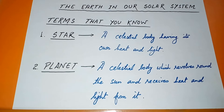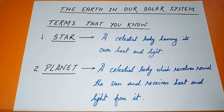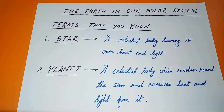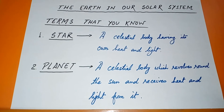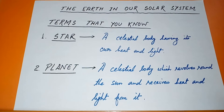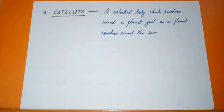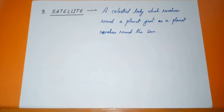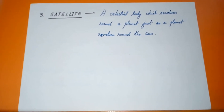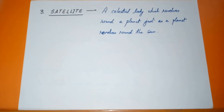The second term is planets. A planet is a celestial body which revolves around the sun and receives heat from the sun. Planets do not have their own heat and light — they only receive heat and light from the sun. The third term is satellites: celestial bodies which revolve around planets, just as planets revolve around the sun.